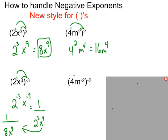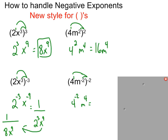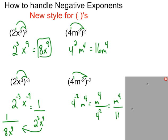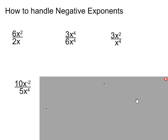Let's try this one. We get 4 to the negative 2nd, and m to the 4th — because negative times negative is positive, so we still respect those rules. The 4 is unhappy because it has that negative 2nd power, so we move it underneath. But m to the 4th is completely content to stay where it's at. The final answer is m to the 4th over 16.